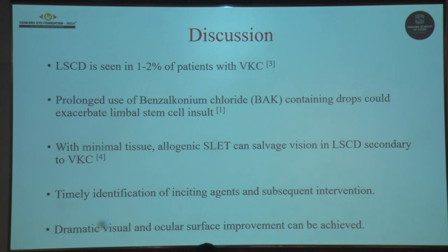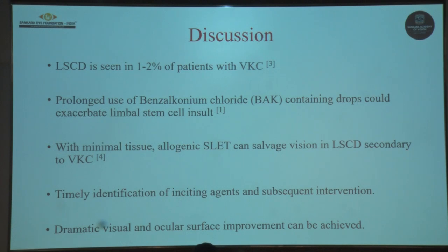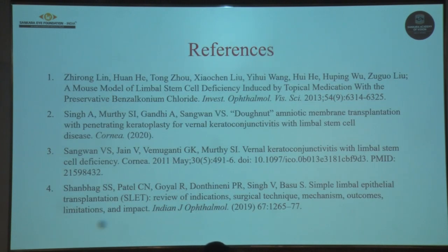Limbal stem cell deficiency is seen in 1–2% of patients with vernal keratoconjunctivitis and is a significant ocular morbidity. Prolonged use of benzalkonium chloride-containing drops can exacerbate limbal stem cell insult due to chronic ocular surface inflammation, as shown in mouse models. With minimal tissue, allogeneic SLIT can cause remarkable improvement in ocular surface and vision. Timely identification of inciting factors and appropriate management are important to salvage vision in this young population.